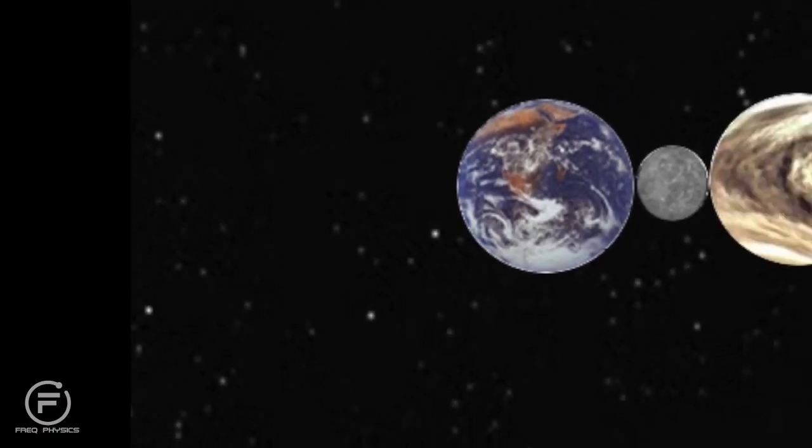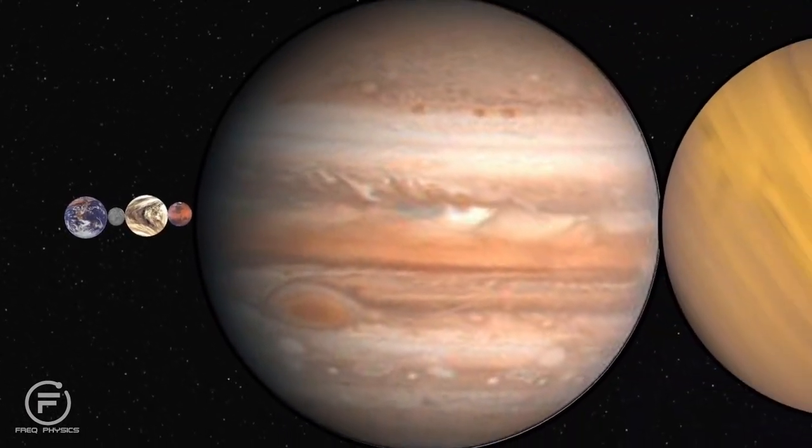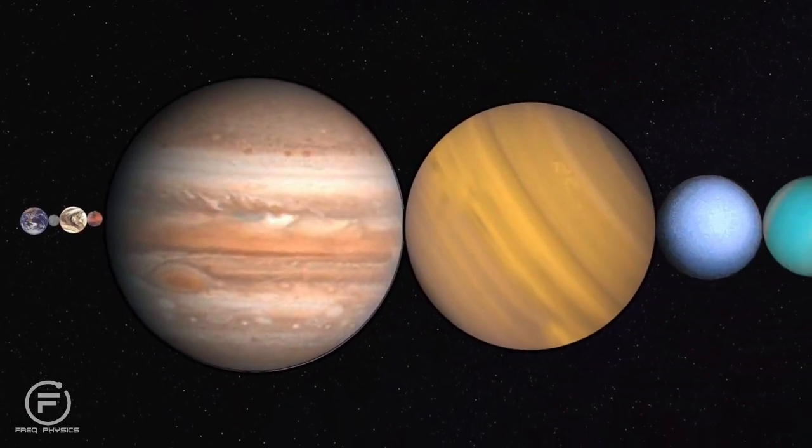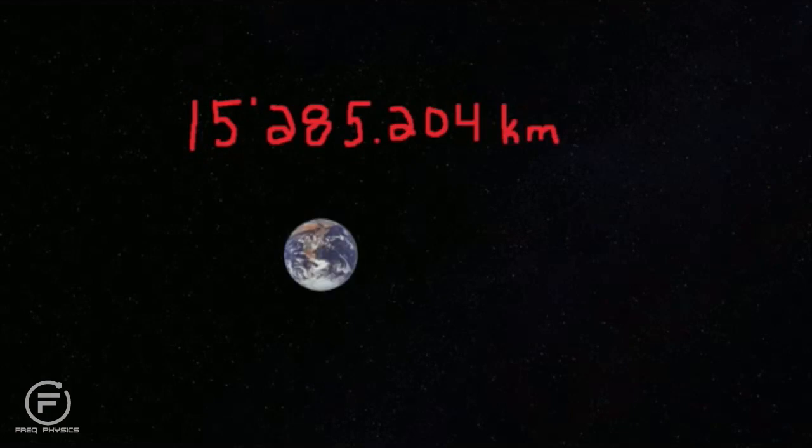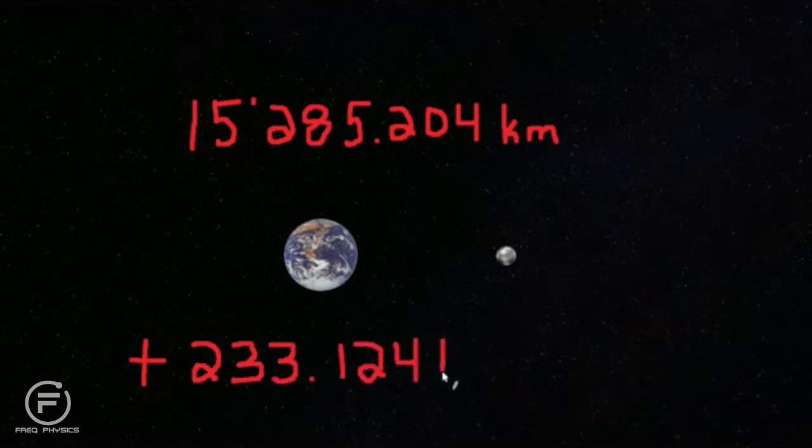Which means, at the furthest point, we could fit all the non-Earth planets and Pluto in between the Earth and the Moon and still have 15,285.204 kilometers, which is enough room to fit a clone Earth and an extra Pluto plus 233.124 kilometers.